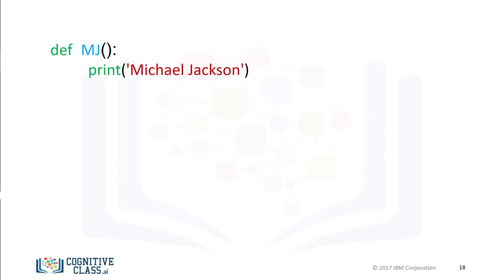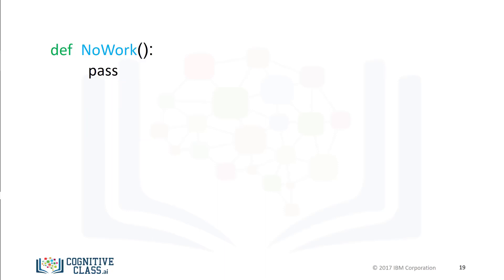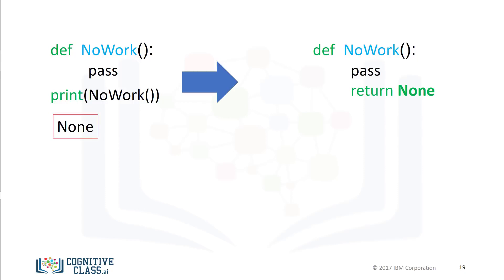In many cases, a function does not have a return statement. In these cases, Python will return the special None object. Practically speaking, if your function has no return statement, you can treat it as if the function returns nothing at all. The function mj simply prints the name Michael Jackson. We call the function, and it prints Michael Jackson. Let's define the function no_work that performs no task. Python doesn't allow a function to have an empty body, so we can use the keyword pass, which doesn't do anything but satisfies the requirement of a non-empty body. If we call the function and print it out, the function returns None. In the background, if the return statement is not called, Python will automatically return None.